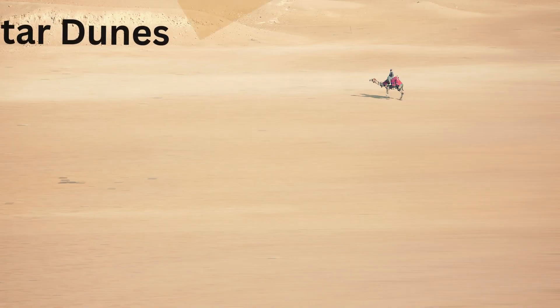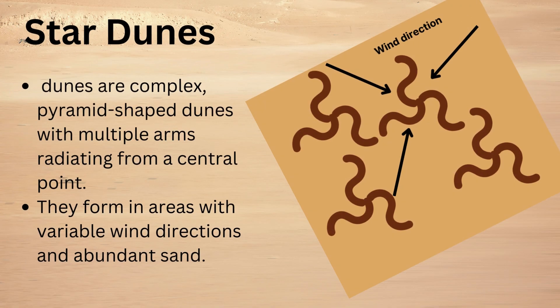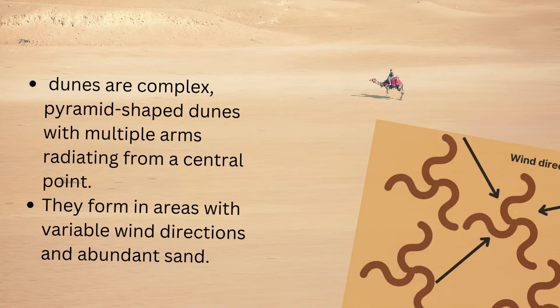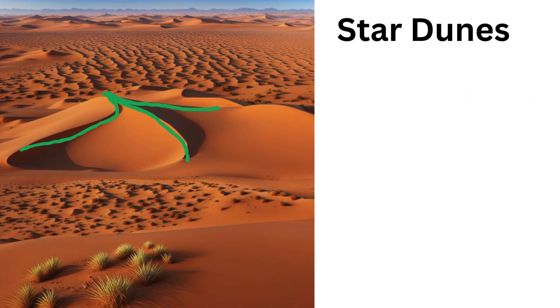Next one is star dunes. These are complex, pyramid-shaped dunes with multiple arms radiating from a central point. Here you can see the image. They form in areas with variable wind direction and abundant sand. You can find them in deserts like the Sahara and the Great Sand Sea.